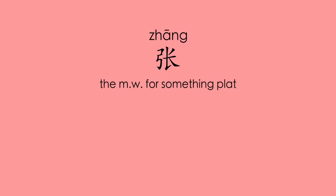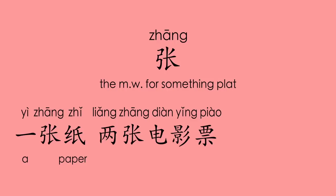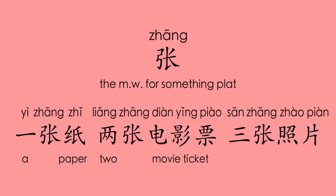张 — the measure word for something flat. 一张纸 (a piece of paper), 两张电影票 (two movie tickets), 三张照片 (three photos).